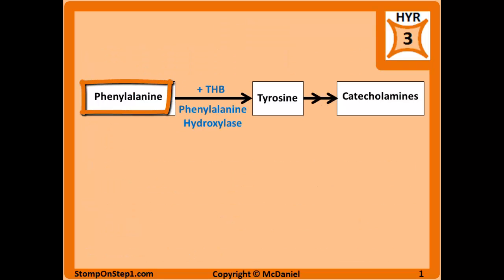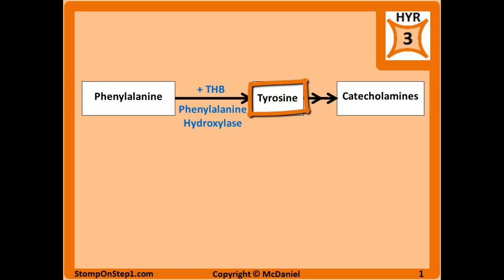Phenylalanine is an essential amino acid that's going to be broken down into tyrosine through the action of the enzyme phenylalanine hydroxylase and its cofactor THB, or tetrahydrobiopterin. Phenylalanine is turned into tyrosine which can then be converted to different kinds of catecholamines and melanin and some other things.